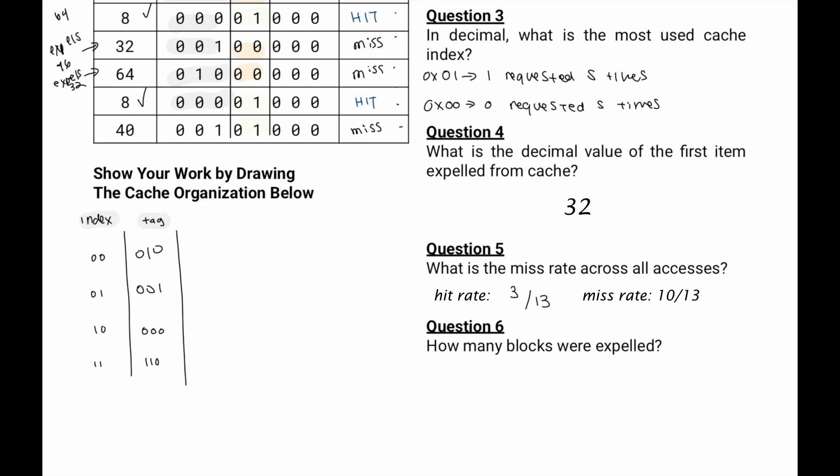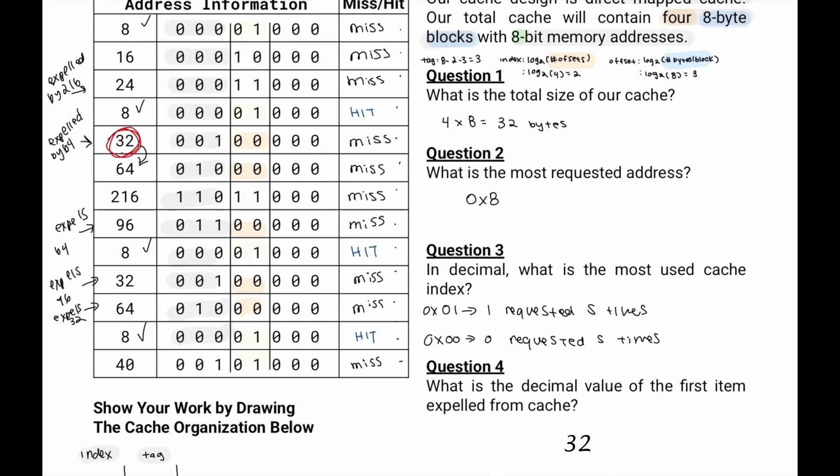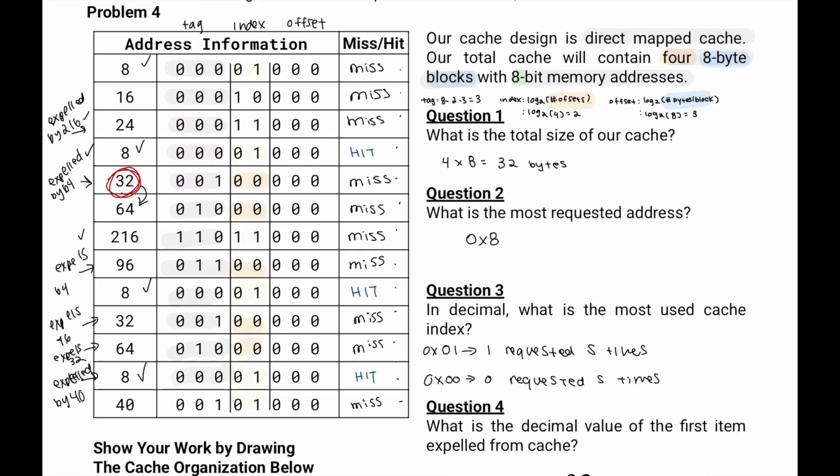And then how many blocks were expelled? We also know that 8 was expelled by 40. So it'll be 1, 2, 3, 4, 5, 6 total blocks.